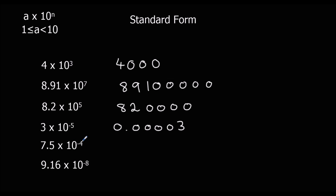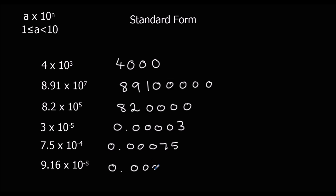7.5 times 10 to the power of minus 4: that's going to give us 3 zeros then the 7, 5 — so 0.00075. 9.16 times 10 to the power of minus 8: we're going to have 7 zeros and then 9.16.